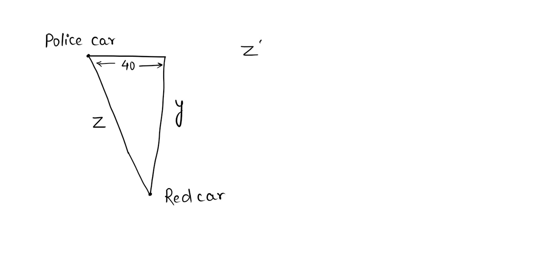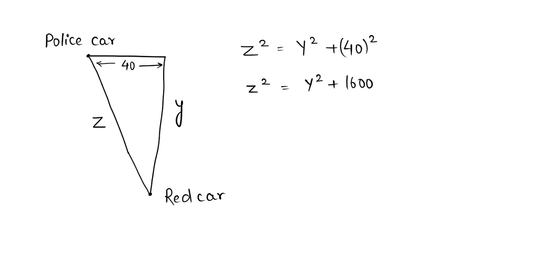Here we can write that z squared equals y squared plus 40 raised to the power 2, so z squared equals y squared plus 1600. We are differentiating both sides of the equation with respect to t, so d/dt of z squared equals d/dt of y squared plus d/dt of 1600.